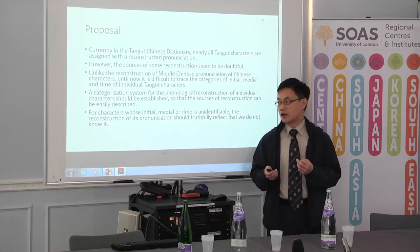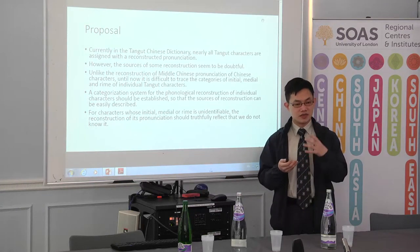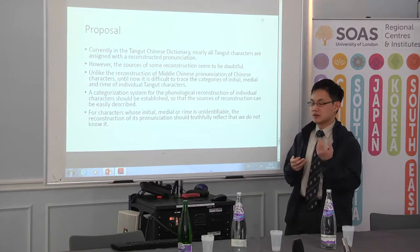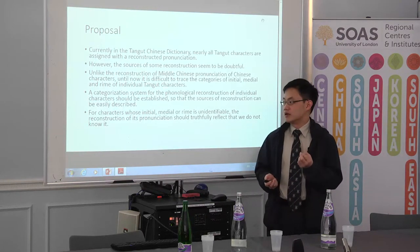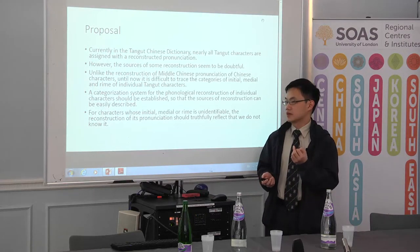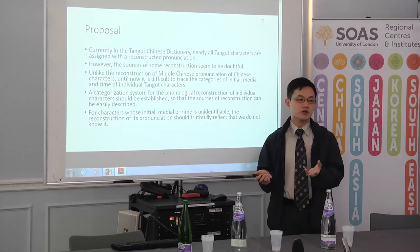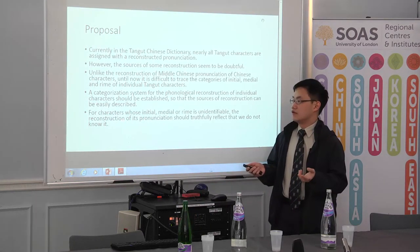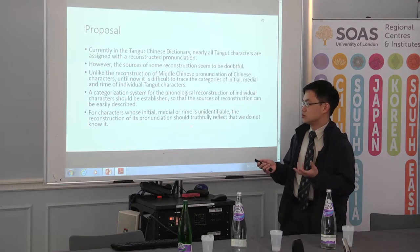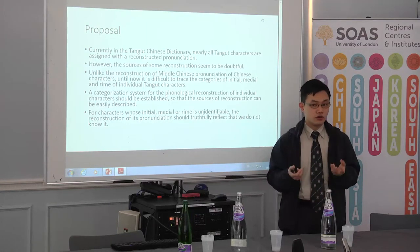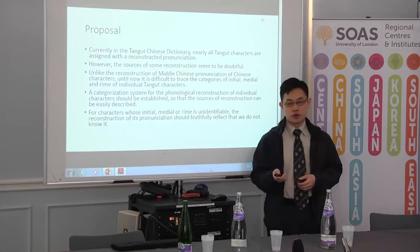This is something I am now working on. The part for initials is relatively easy, but for the rhymes — especially when related to internal differences between the cycles — it can be very problematic. But even if we don't know the exact sound value of some cycles or rhymes, it doesn't really matter. The point is that we have to acknowledge what we know and what we don't know about the pronunciation of a character. For characters whose initial, medium, or rhyme is unidentifiable, we should use some symbol to mark that we are not clear about it. The reconstructed pronunciation should truthfully reflect what we know and what we don't know. This is my proposal.